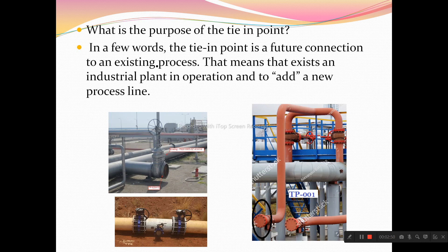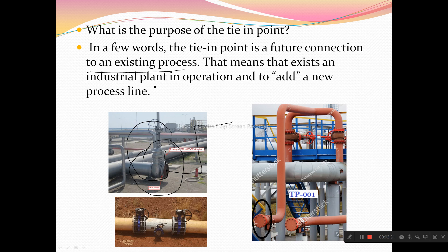What is the purpose of tie points? In few words, tie points mean a future connection. Wherever you are getting a tie point, it means you are getting a future connection to an existing process. When you have done your project and you are getting tie points, it means an existing industrial plant is in operation and you need to add a new process line to it.